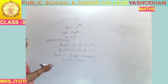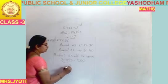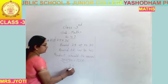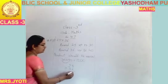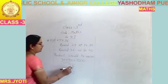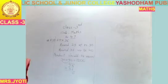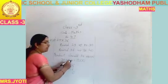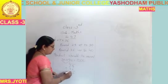Now we are taking the multiplication: 25 multiplied by 36. 6 fives are 30, carry 3. 6 twos are 12, 12 and 3 is 13, 14, 15.